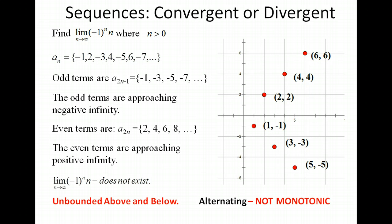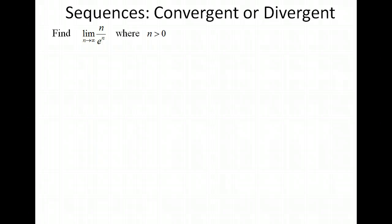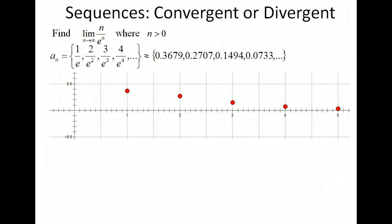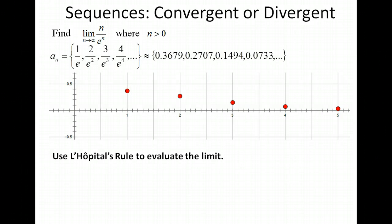Let's look at our next example. We have the limit as n goes to infinity of n over e^n. n over e^n represents the terms of the sequence, and we want to look at the limit to decide whether it's convergent or divergent. In terms of e, it's not too easy to see what's happening, but in decimal form you can see these numbers will never be negative and they appear to be getting smaller and smaller, approaching zero. Looking at the graph confirms that the numbers are approaching zero. Let's use L'Hôpital's rule to evaluate the limit.